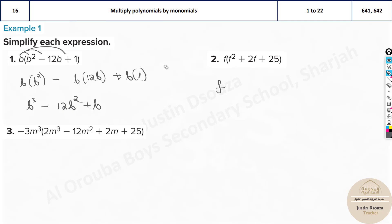Same thing over here. The answer will be F cubed plus 2F squared plus 25F. Now this is a big term but it's fine. You can do minus 3M cubed times 2M cubed. Multiply minus 3M cubed times minus 12M squared and then minus 3M cubed times 2M minus 3M cubed times 25.